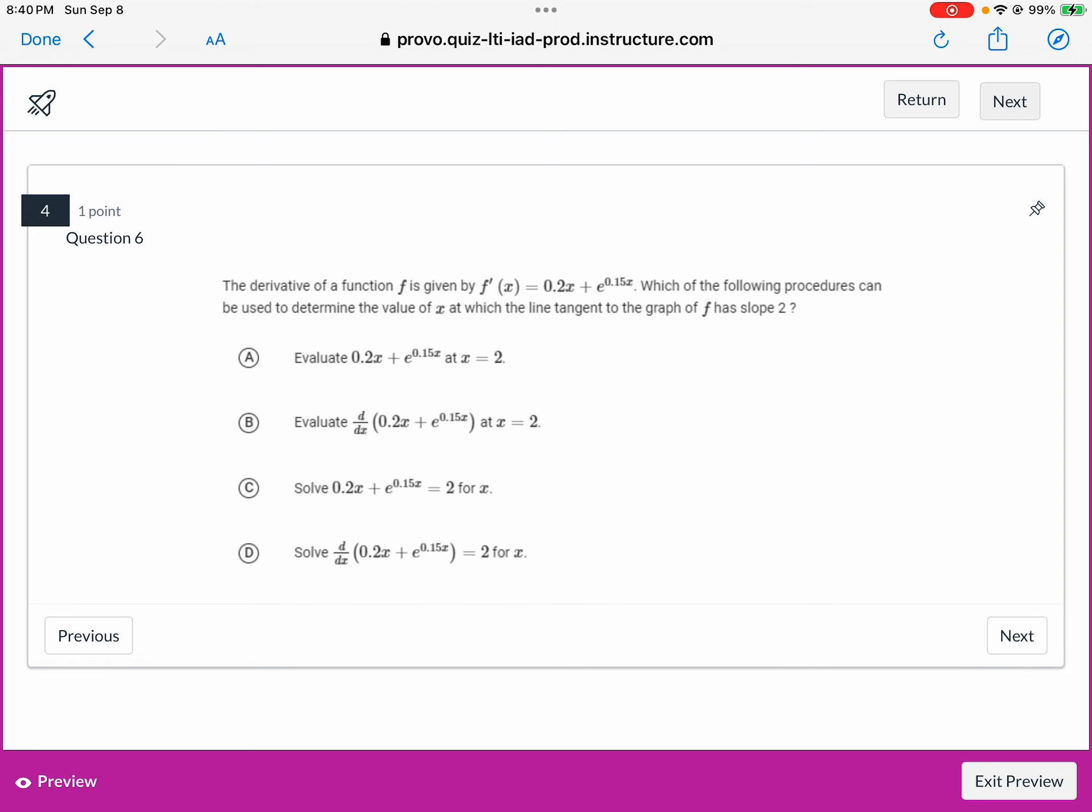So the derivative of function f, remember that derivative f prime of x is what the slope of f is. So the outputs for f prime tell us the slope of f at a certain value of x. Which of the following procedures can be used to determine the value of x at which the line tangent to graph of f has a slope of 2? So remember that the y values of f prime are the slope of f.